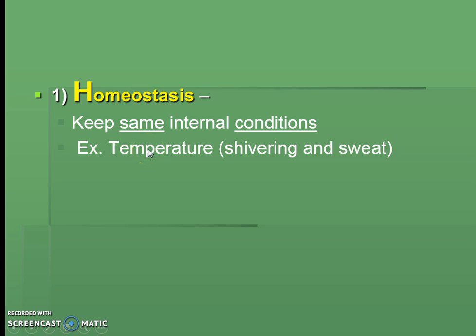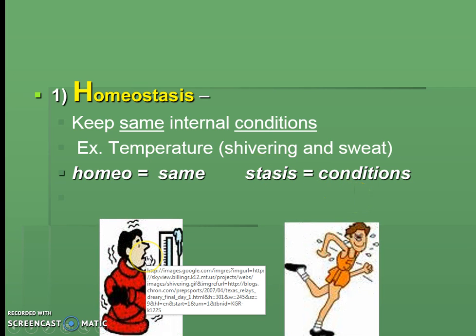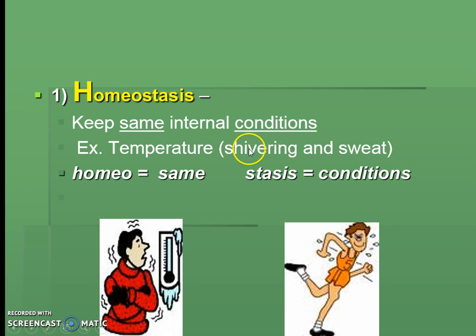The prefix 'homeo' means same, and 'stasis' means conditions. So if it gets too cold outside, the way my body keeps the same temperature inside so I don't freeze is that I shiver. If it gets too hot, my body sweats to avoid heat shock. That's how my body reacts to changing temperatures — keeping the inside conditions the same. You can write 'inside conditions' above the word 'internal' to help you remember.